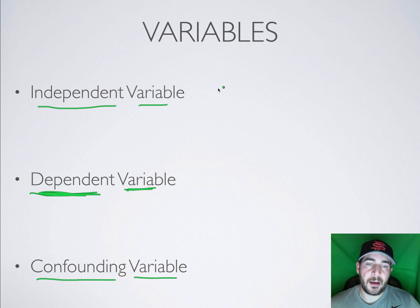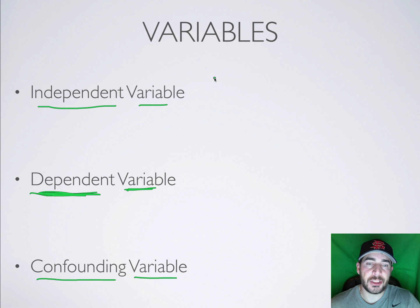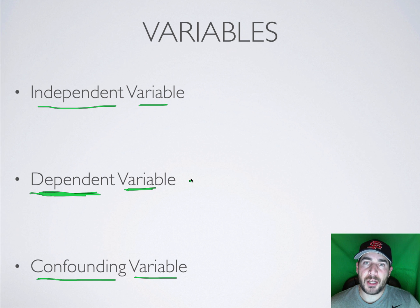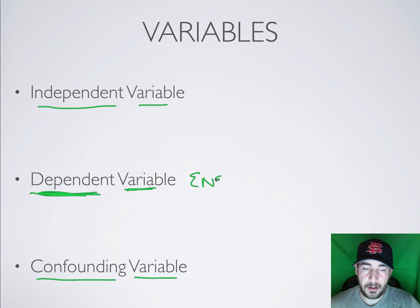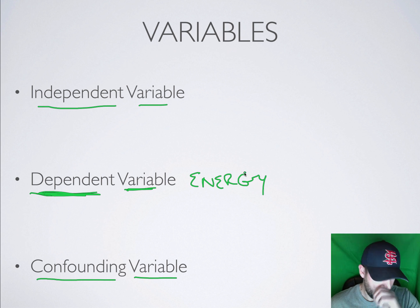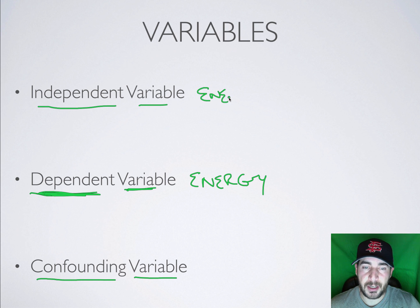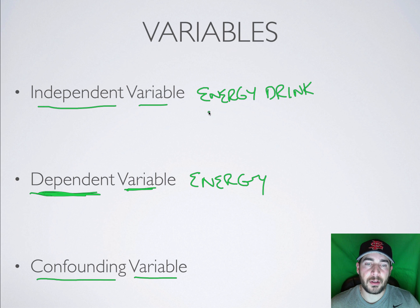So if I'm doing a research study on how Monster energy drinks affect your level of energy throughout the day, what am I going to be measuring? The amount of energy you have throughout the day. So that's going to be my dependent variable. My independent variable is going to be the types of energy drinks. The research question was: what type of energy drink will provide the most energy throughout the day? My independent variable — the thing I'll be changing — is my energy drink.